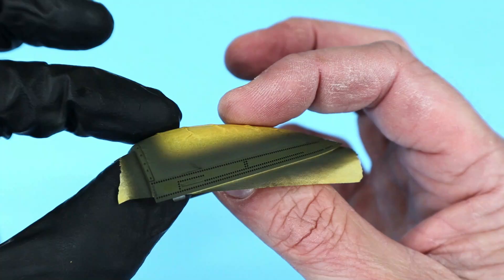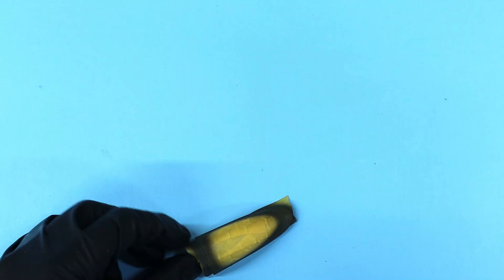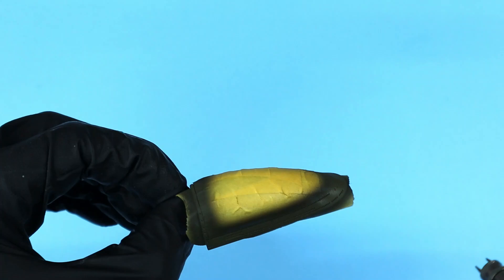Before peeling that tape off, make sure that you weather and clear coat the outer frame to match the rest of your model. For this video, I'll just seal it in with a coat of AK's Ultra Matte Varnish. I just spray that varnish on pretty liberally and then let it dry.